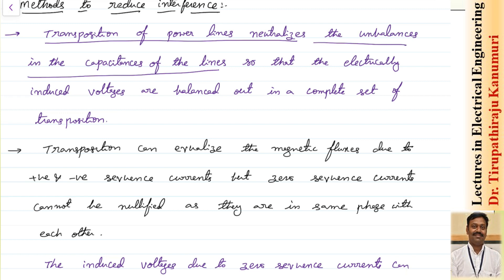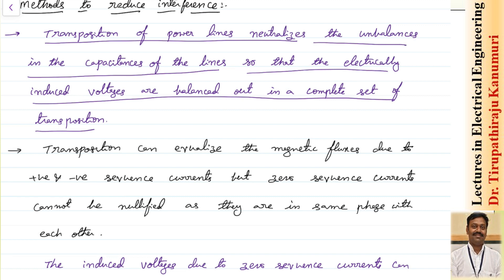If the capacitances are equal, the respective charges passing through each phase are displaced by 120 degrees, so they will nullify each other if you transpose the transmission lines. The electrically induced voltages are balanced out in a complete set of transposition. Transposition ensures the distance from each conductor to the communication line becomes equal, so capacitances get equalized in all the lines.